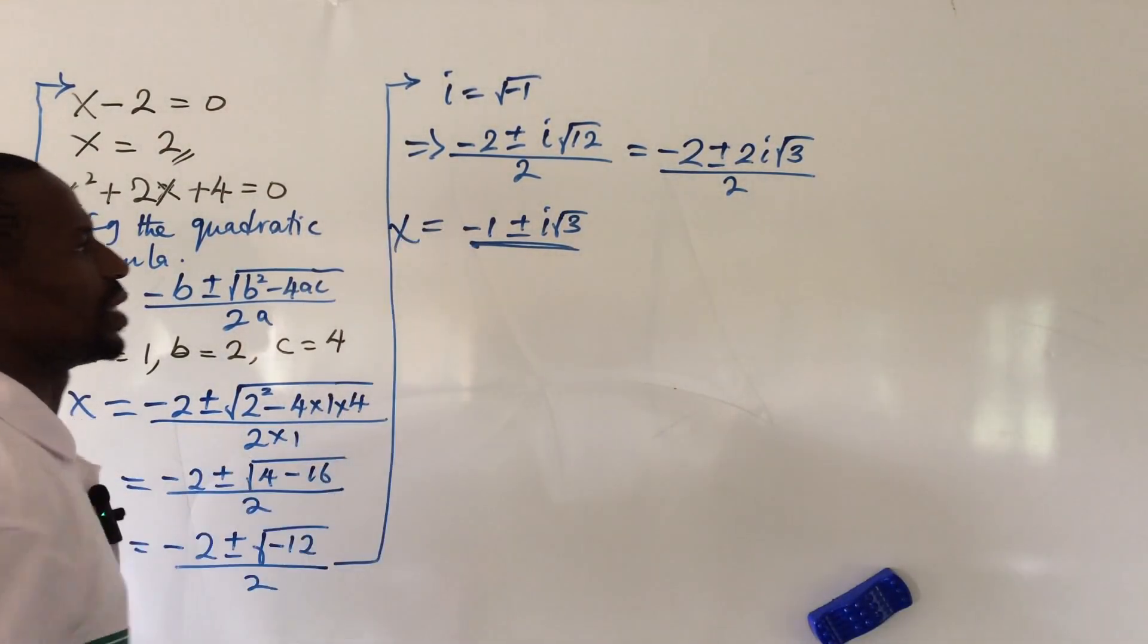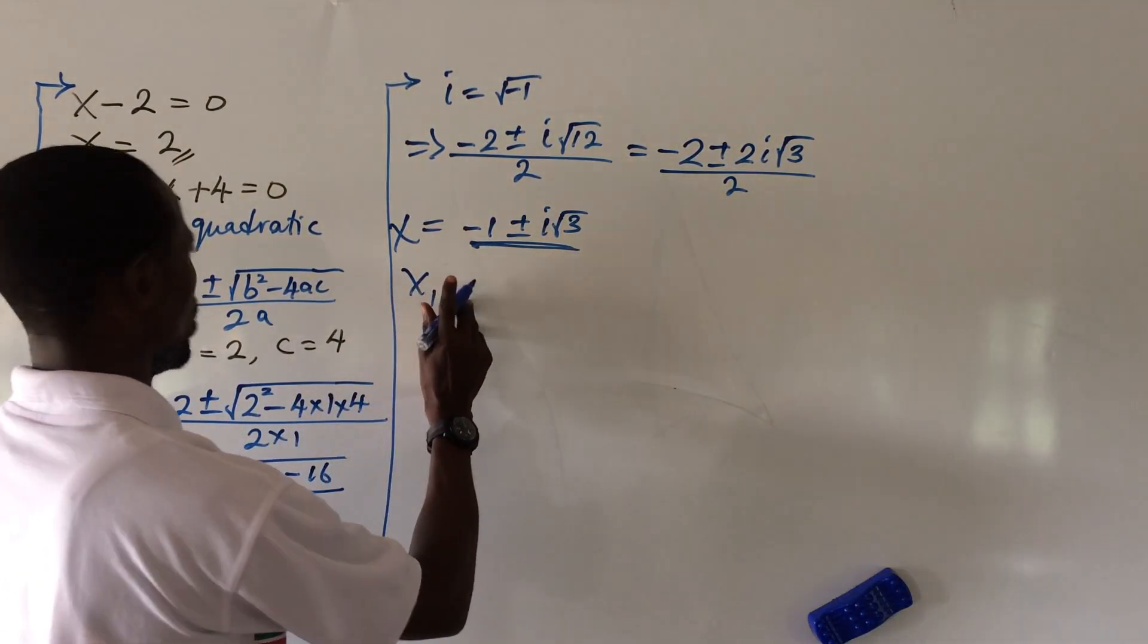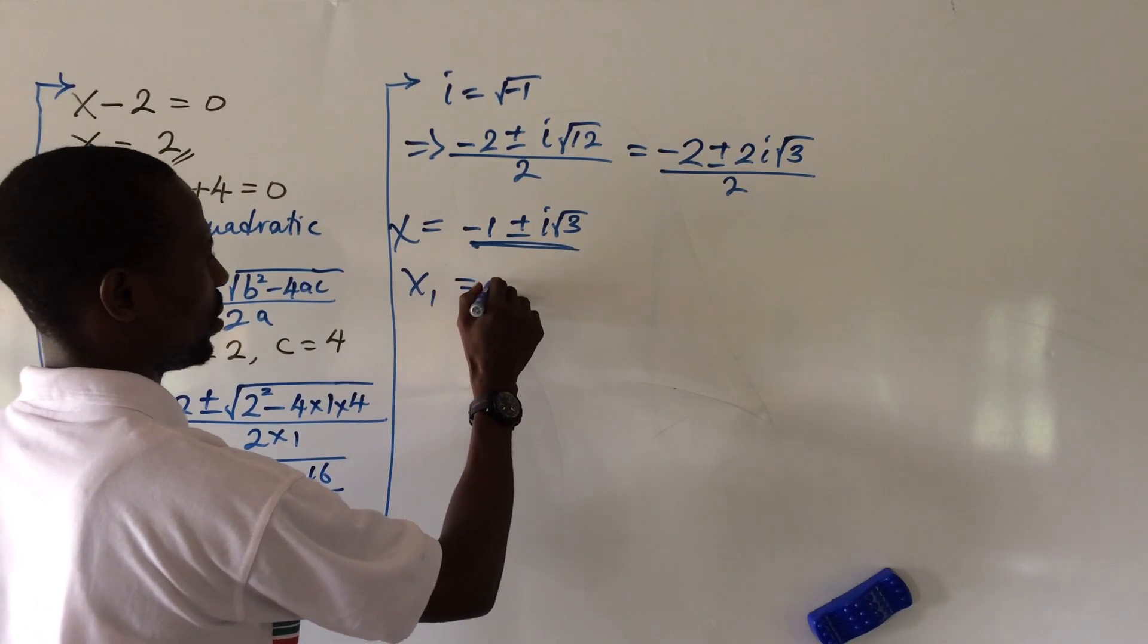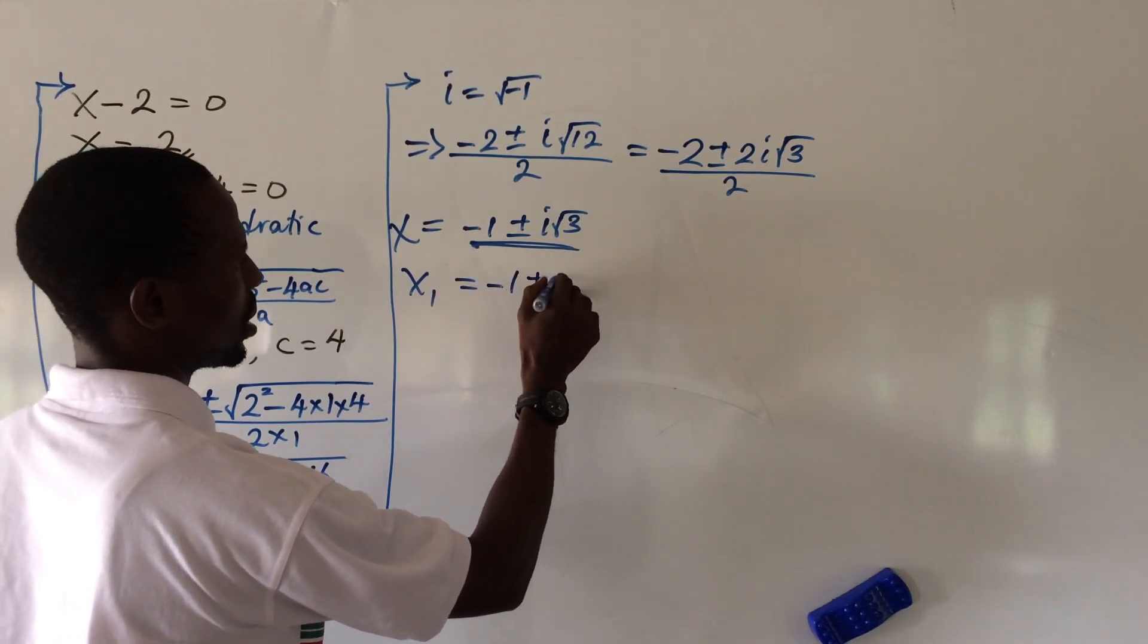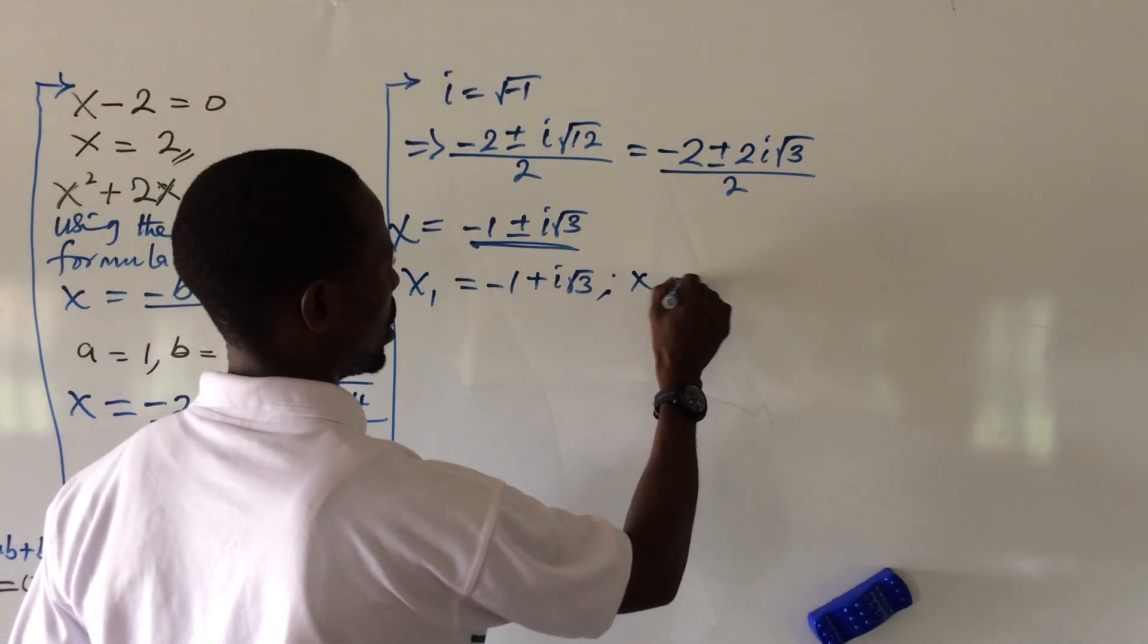So x is the solution to your x. I'm not having x here. So if we split this, we're going to have x1 from here, we're going to get minus 1 plus i root 3.